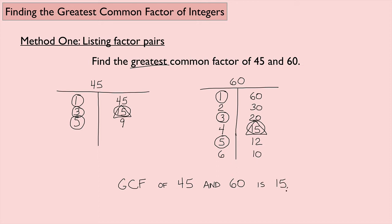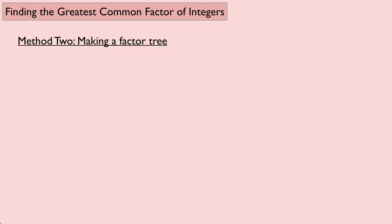That was Method 1. Let's look at Method 2, which should give us the same answer. We saw with Method 1 that the answer was 15, so we should expect the greatest common factor to also be 15 when we use Method 2.